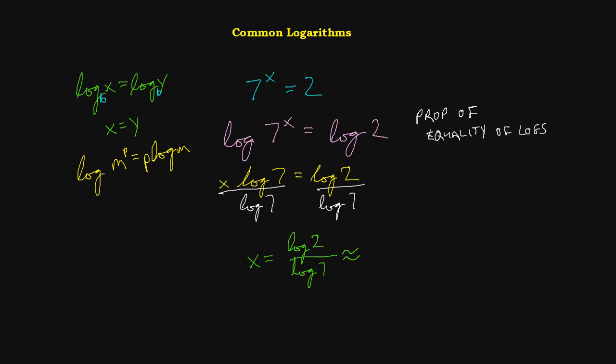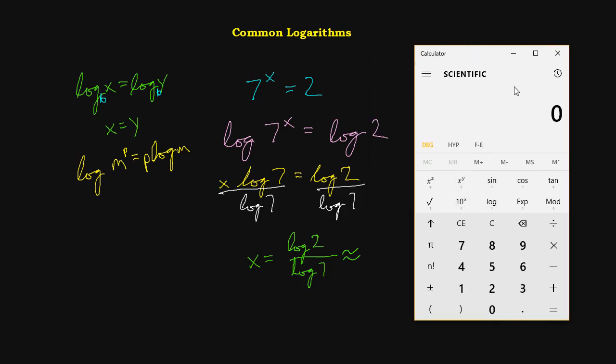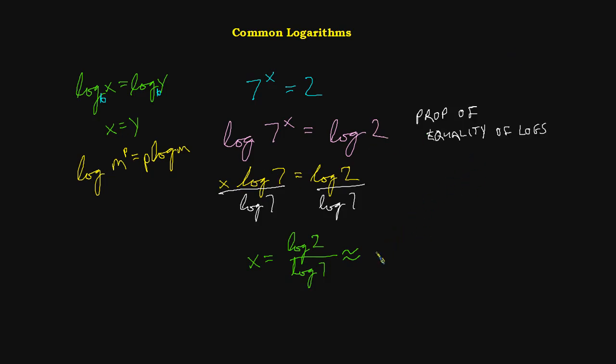Again, be careful when you're entering this stuff into the calculator. It's really easy to get the parentheses mixed up. So if you write it in your calculator, log of 2, before you do just the divided by sign, at a bare minimum, make sure you close the parentheses. And then if you do the divided by sign and then you do log 7, you won't make a mistake. An easy thing that goes wrong here is that with no closing parentheses, if you just write divided by log 7, what you get is you get 2 divided by log 7, and then you take the log of that. We don't want that. So let's make it log 2 divided by log 7.